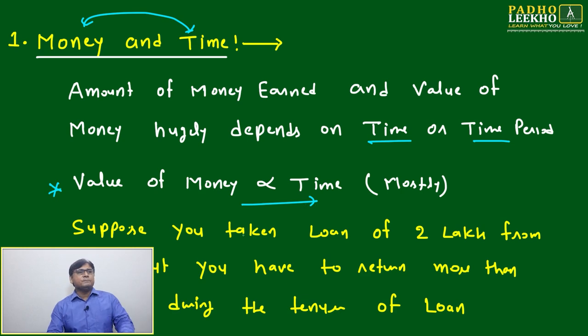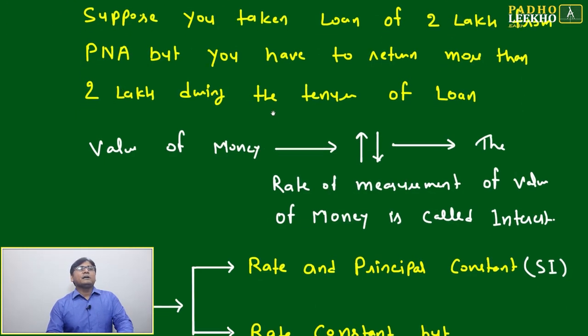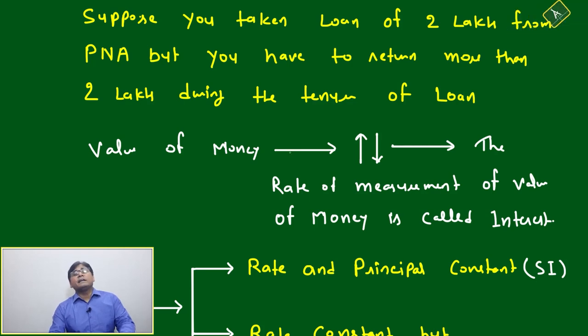Now just suppose you have taken loan of, just a reverse way. Either you can deposit the money in bank or you can take the loan from bank. If you are taking the loan of two lakh from the PNA bank, something will be there. PNA bank, you have to return more than two lakh. Why is it happening? Because value of money is keep on increasing.